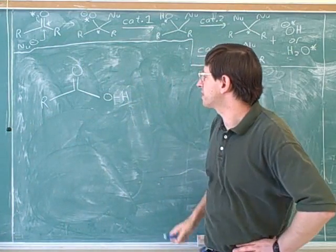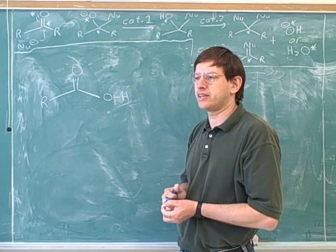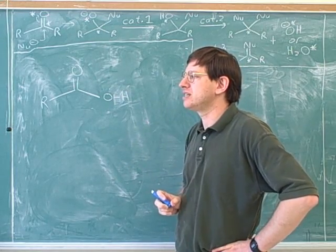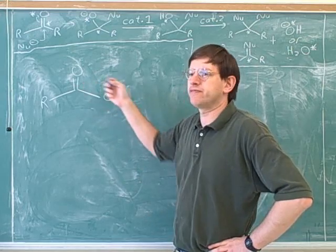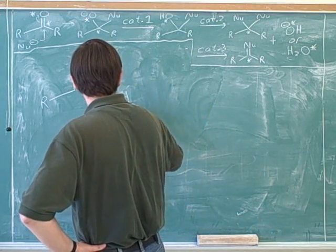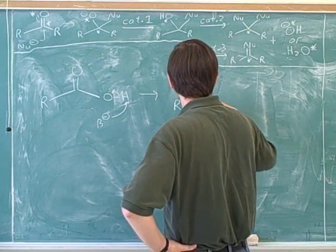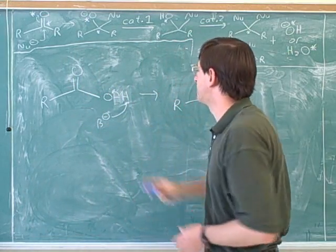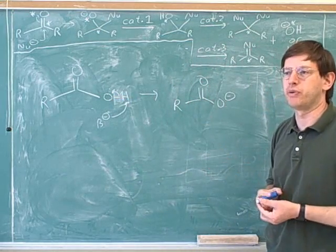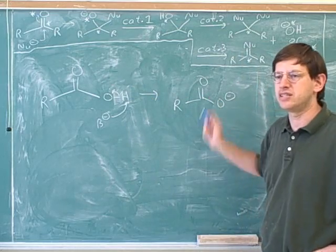One thing we have to remember about carboxylic acids is that they might lose their proton. You have to remember that carboxylic acids might lose their proton. One consequence of that is there's really, in a sense, two different forms of a carboxylic acid. The protonated form and the deprotonated form. There's really two different forms of carboxylic acids, protonated and deprotonated.